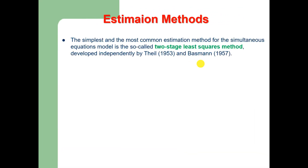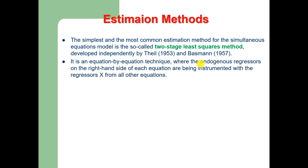There are a number of estimation methods available. The simplest and most common estimation method for the simultaneous equations model is the so-called Two-Stage Least Squares method, developed independently by Theil and Basmann. It is an equation-by-equation technique where the endogenous regressors on the right-hand side of each equation are instrumented with regressors X from all other equations.